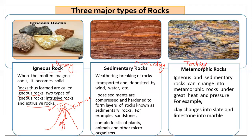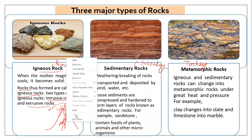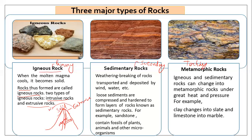Sometimes magma doesn't go out — it gets cold inside the Earth because there isn't enough pressure to push it to the surface. When it cools and solidifies inside the earth, it can take different forms such as dikes or lopoliths. These are called intrusive rocks. So extrusive rock means outer rock and intrusive means inner rock.